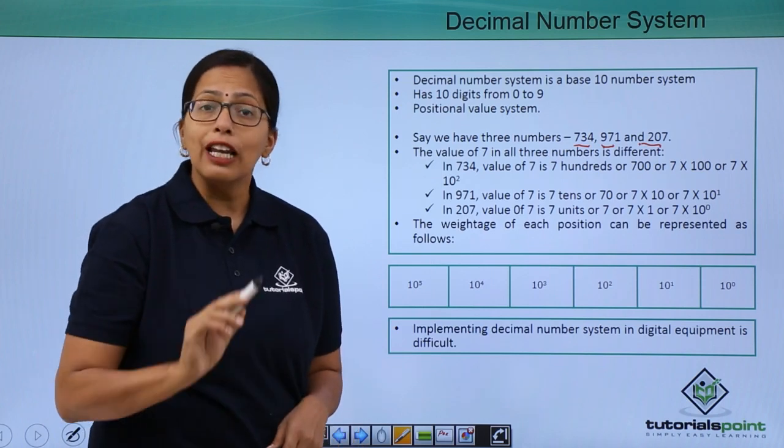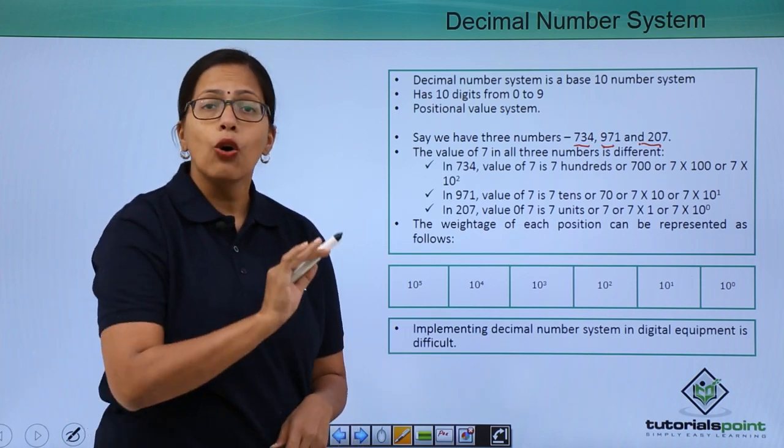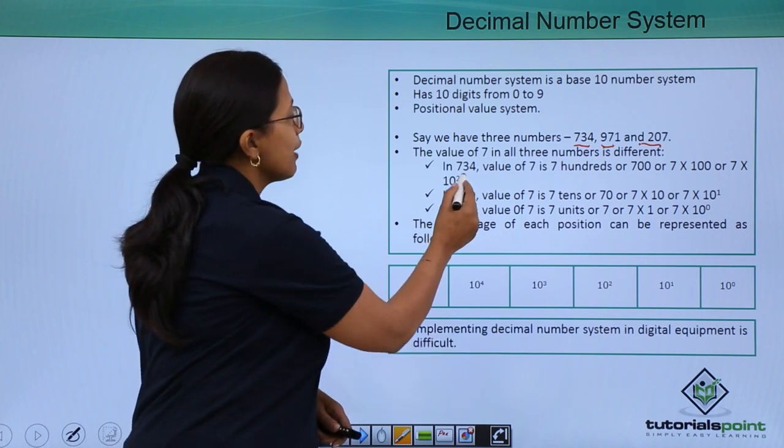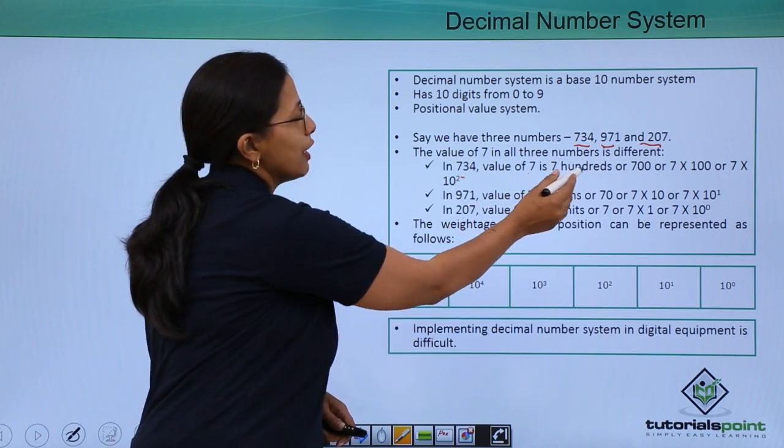However, the value of 7 will be different in all of them. In 734, the value of 7 is 700.